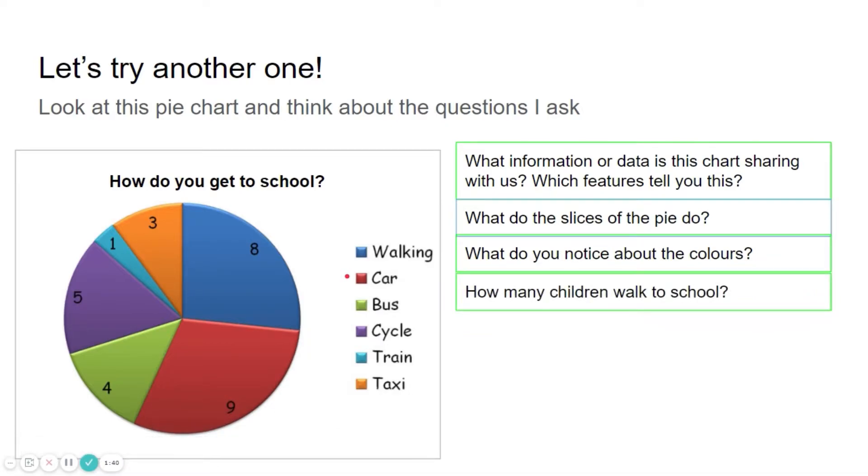How many children walk to school? Well, looking at walking there, it is dark blue. Find the dark blue pie slice and we can see that there's an eight there. So eight children picked walking.